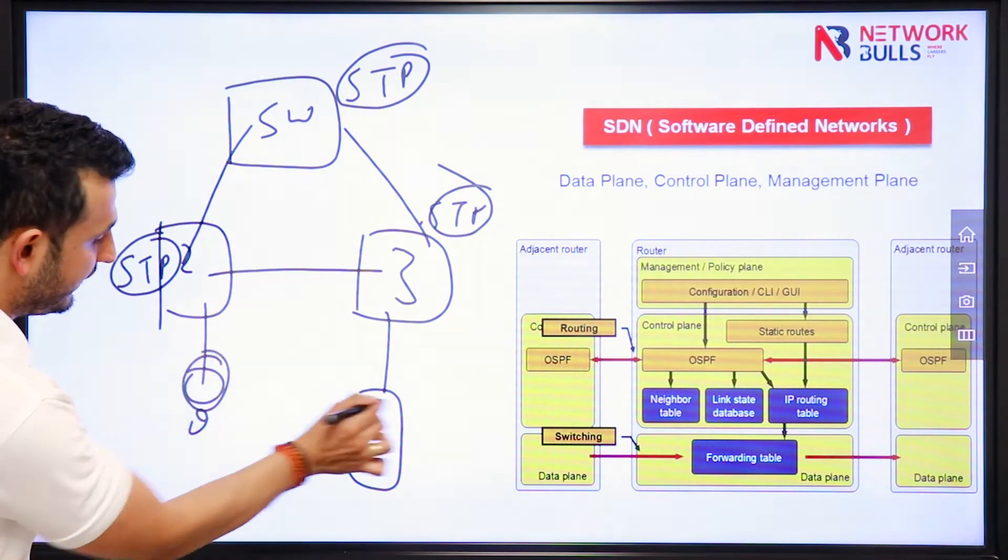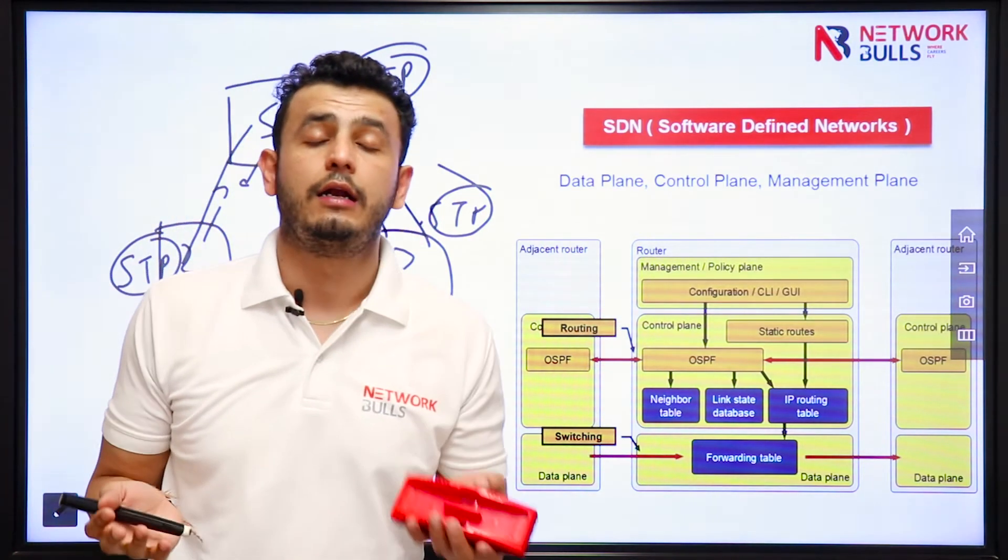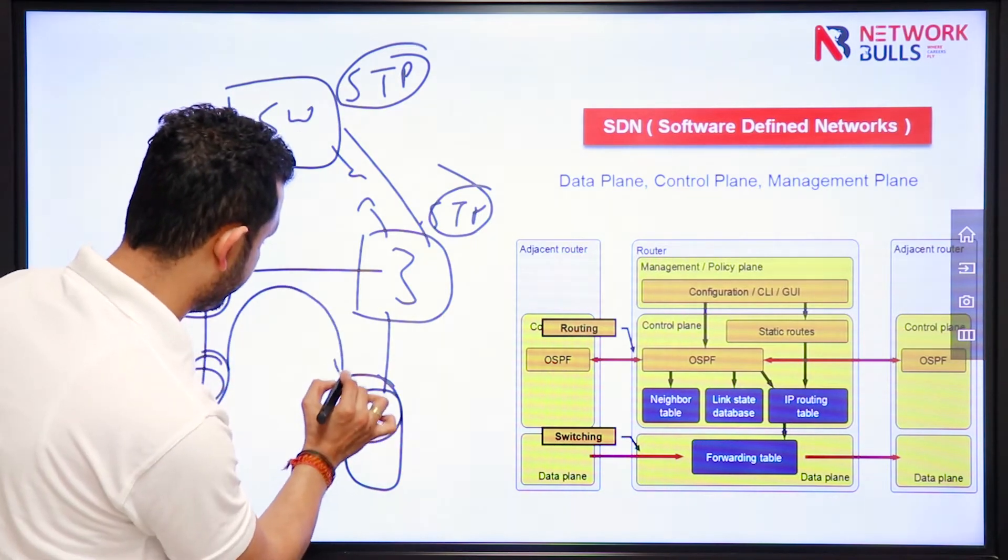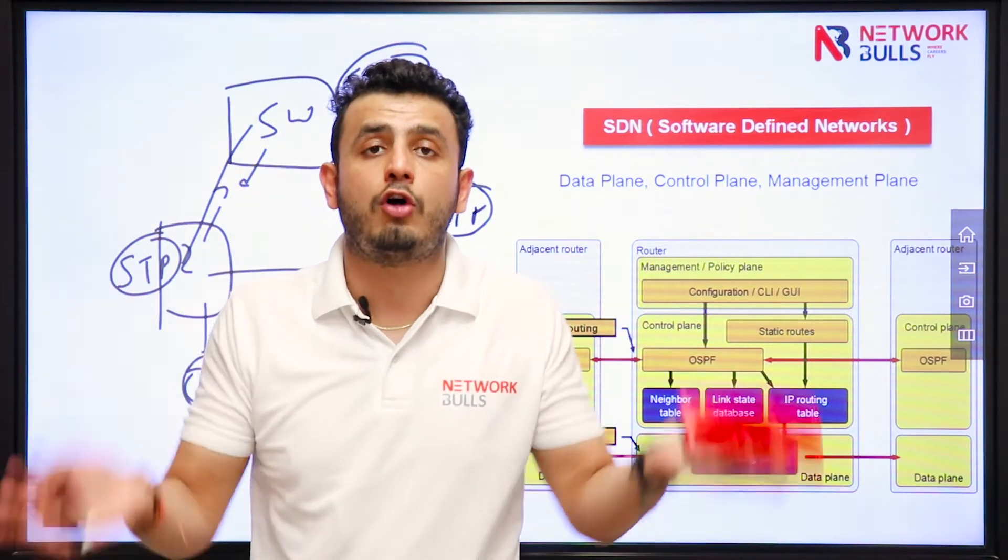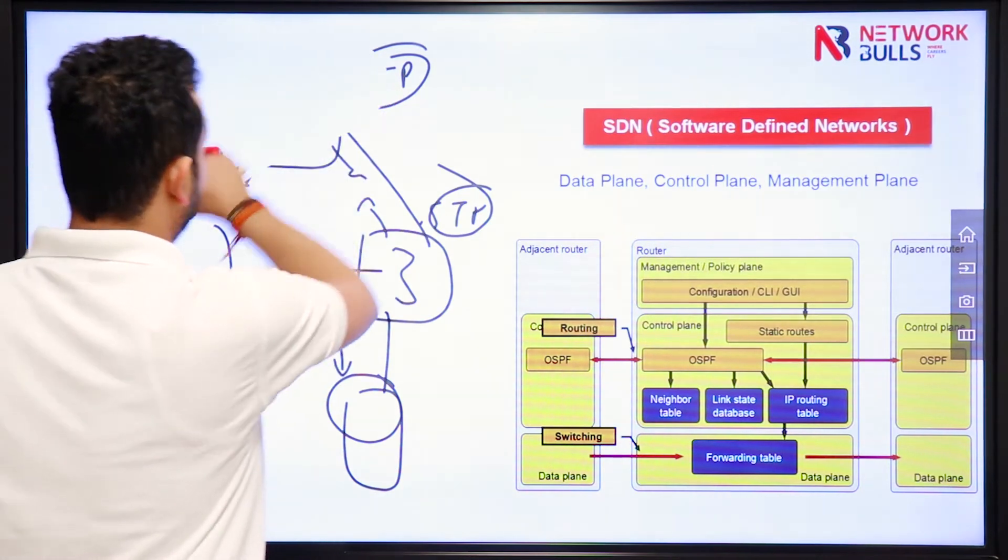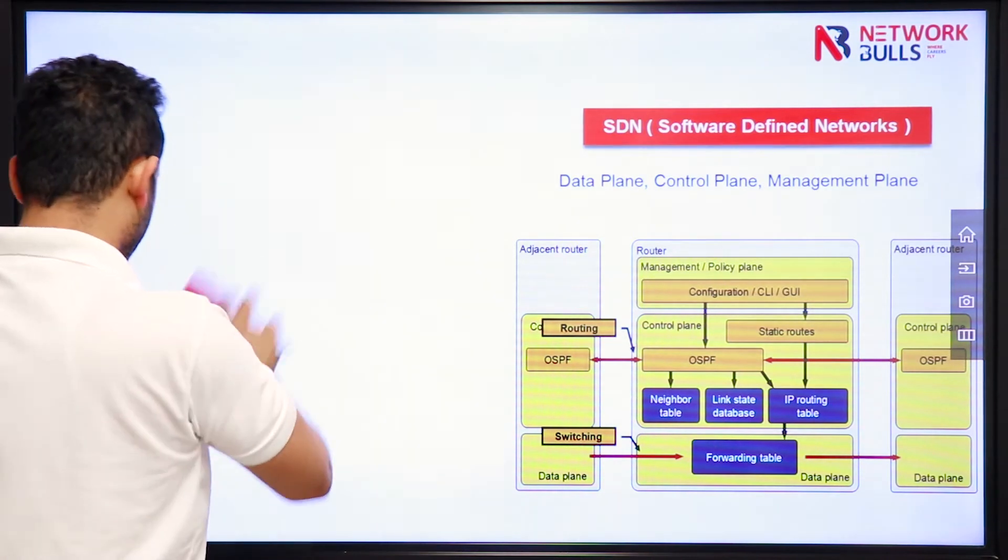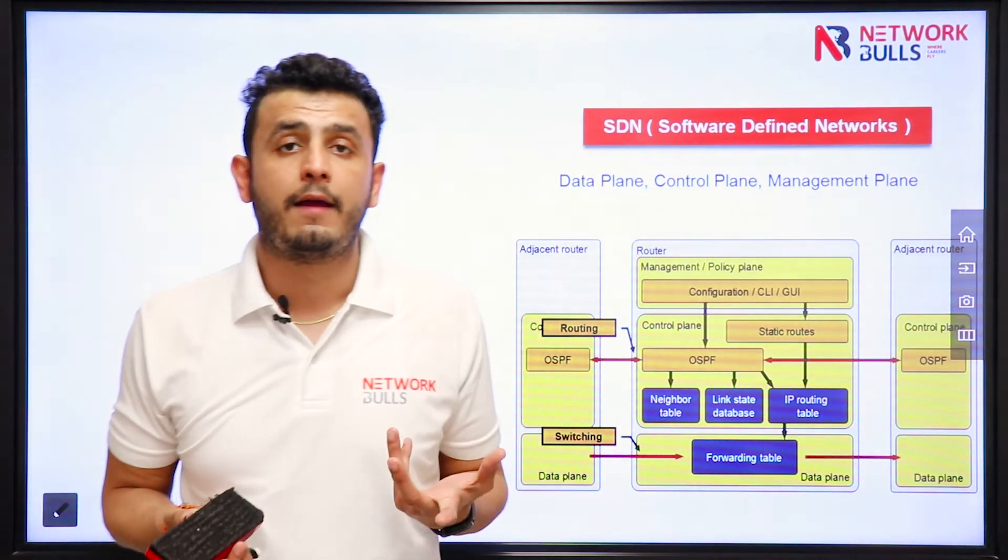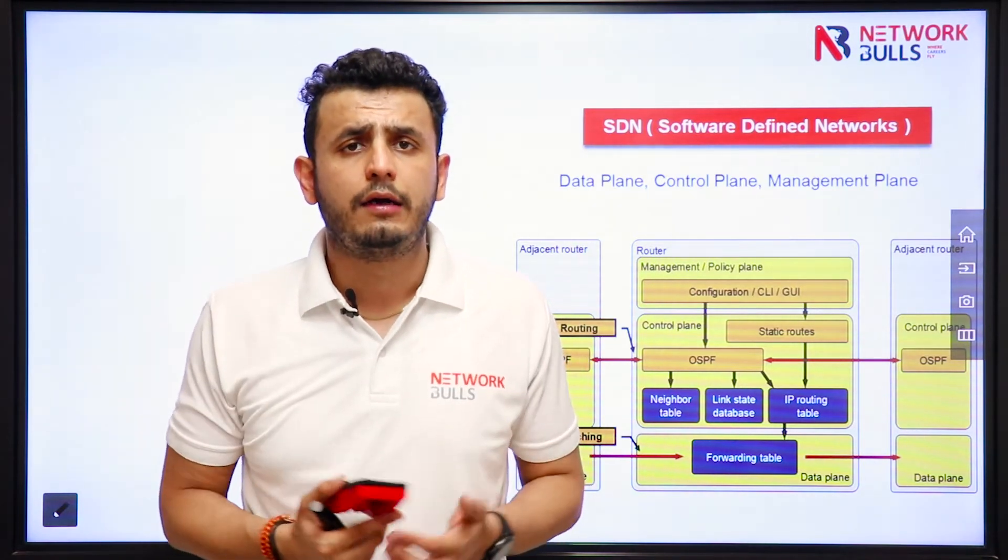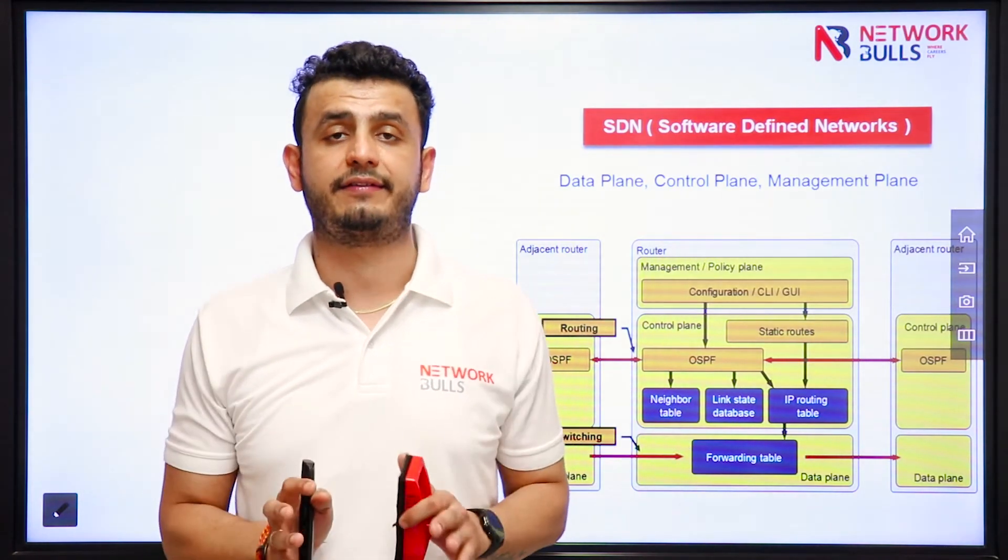So if this user wants to communicate with the server, first of all switches will exchange BPDUs. After exchanging BPDUs, they will form a loop free path and after that, this user is able to communicate with the server. Whether they are routers or they are switches, they have their own control plane. Now my question is why we come up with these routers and switches? Because we want them to forward the frame. Or you can say if I talk about router, I want router to forward a packet. But the thing here is, these devices are busy in doing their control plane activities.